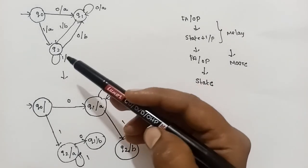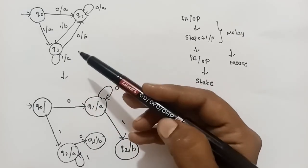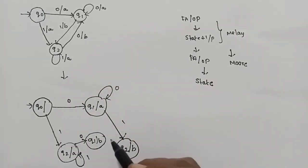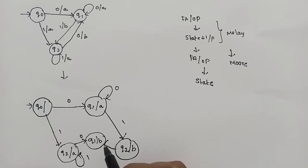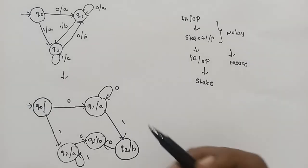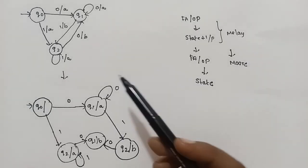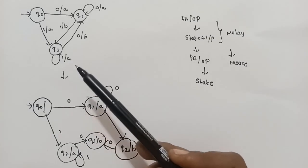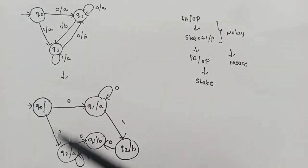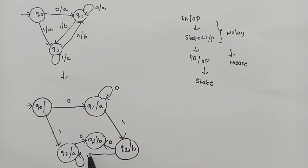Q2 on input 0 goes to Q1 with output B. Q2 on input 1 goes to Q2 with output A.